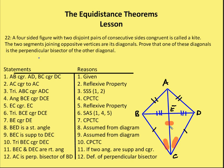By side-angle-side, triangle BCE is congruent to triangle DCE, so BE is congruent to DE by CPCTC. BED is a straight angle, assumed from the diagram, so angle BEC is supplementary to angle DEC. Since angles BEC and DEC are both congruent and supplementary, they are right angles. Therefore AC is perpendicular to BD, and since BE equals ED, AC is the perpendicular bisector of BD.